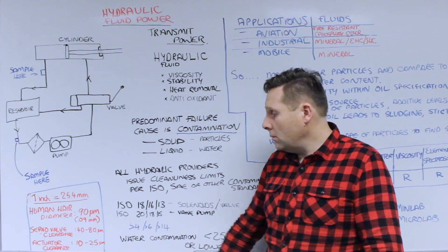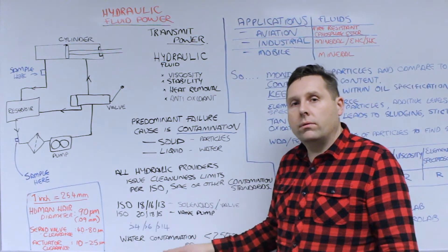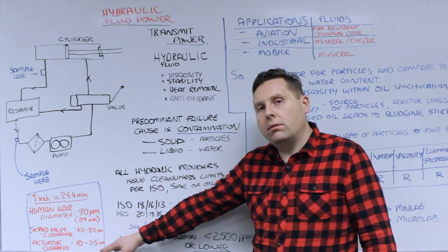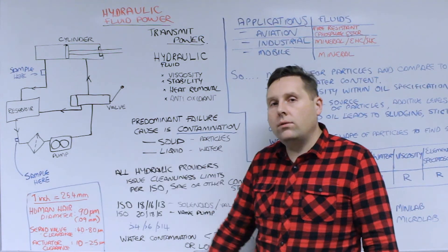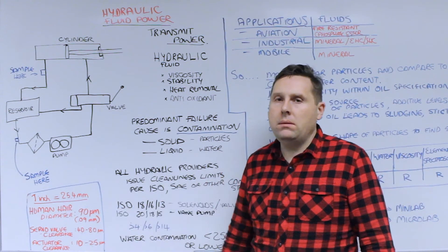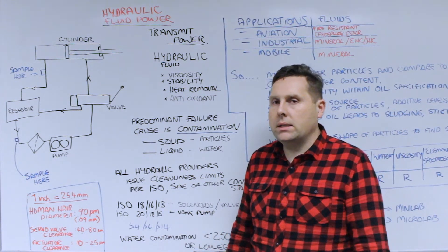But in terms of particle counting we're dealing with 4, 6 and 14. For greater than 4, greater than 6, greater than 14. And servo valves or actuator clearances that are typical in most hydraulic systems nowadays have clearances anywhere from 10 to 80 microns in size. So you can see that we're dealing with very clean systems as a rule.